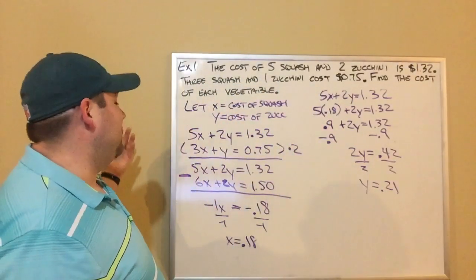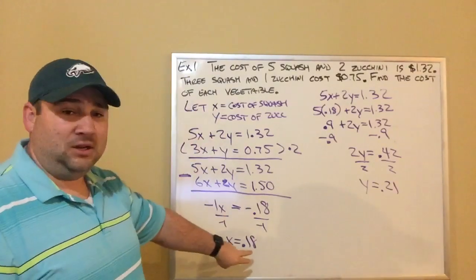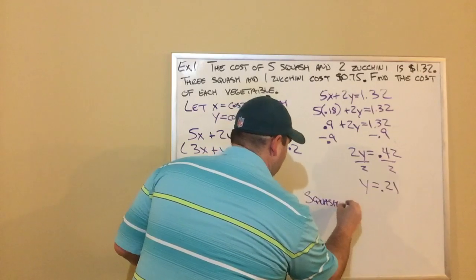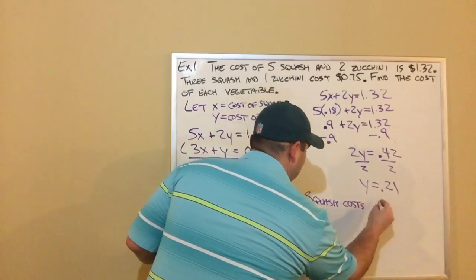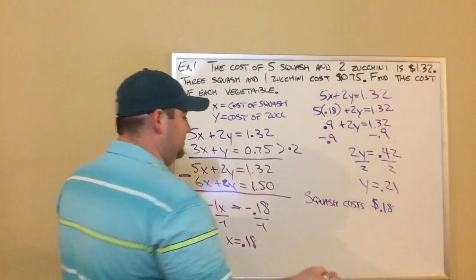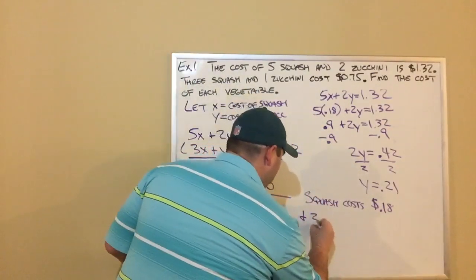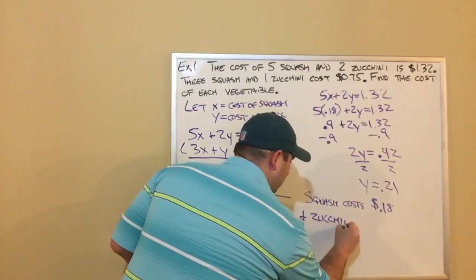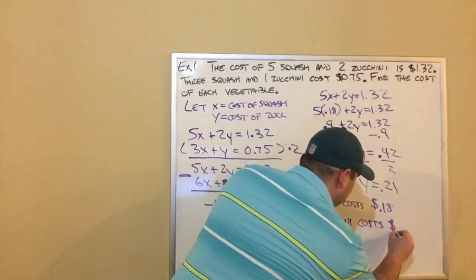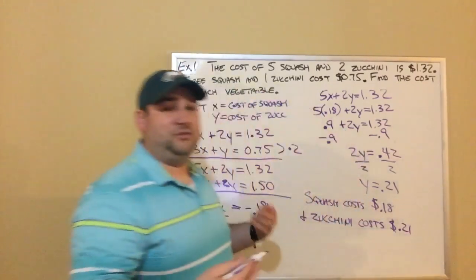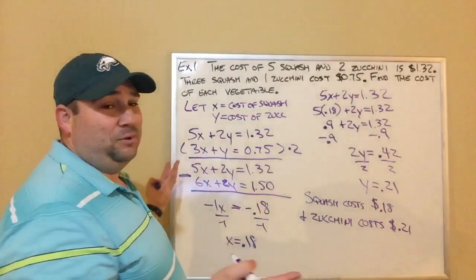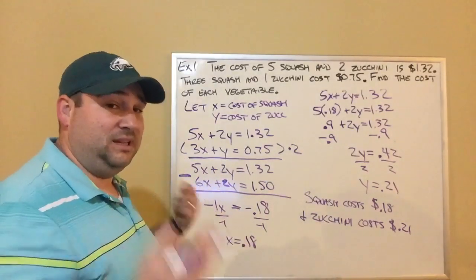So the question was the cost of each vegetable. We figured out a squash costs $0.18. So squash costs $0.18. Don't forget the dollar sign. It's money. You got to label money with the dollar sign. And zucchini costs... I guess my board is moving. I took the board from the classroom and I put it on the wall in my basement. So it's not perfect, but it works. All right. So that is example one. Come back for examples two and examples three.